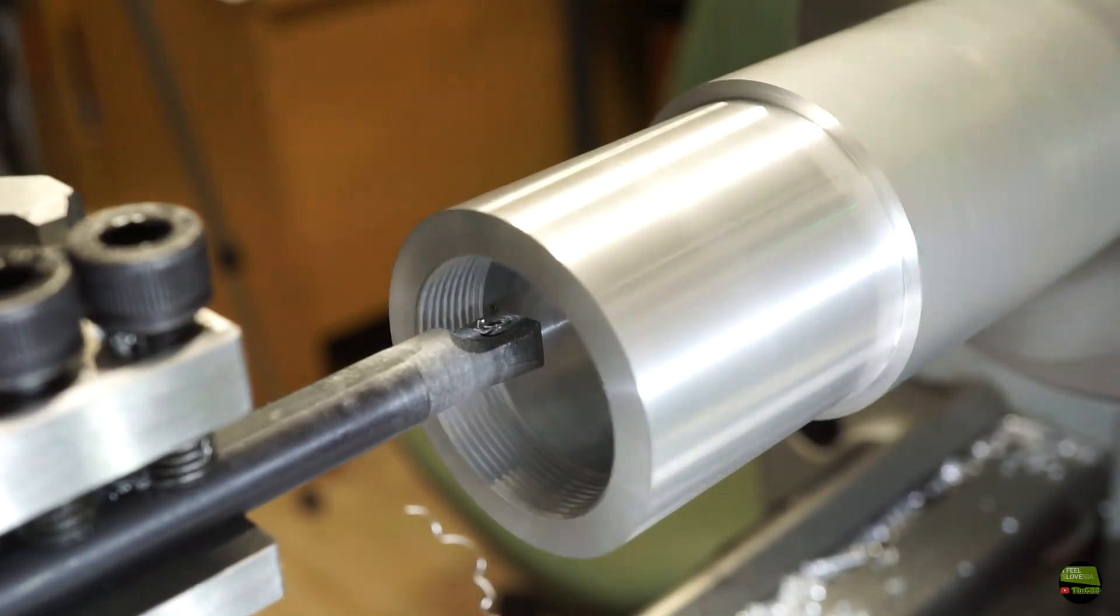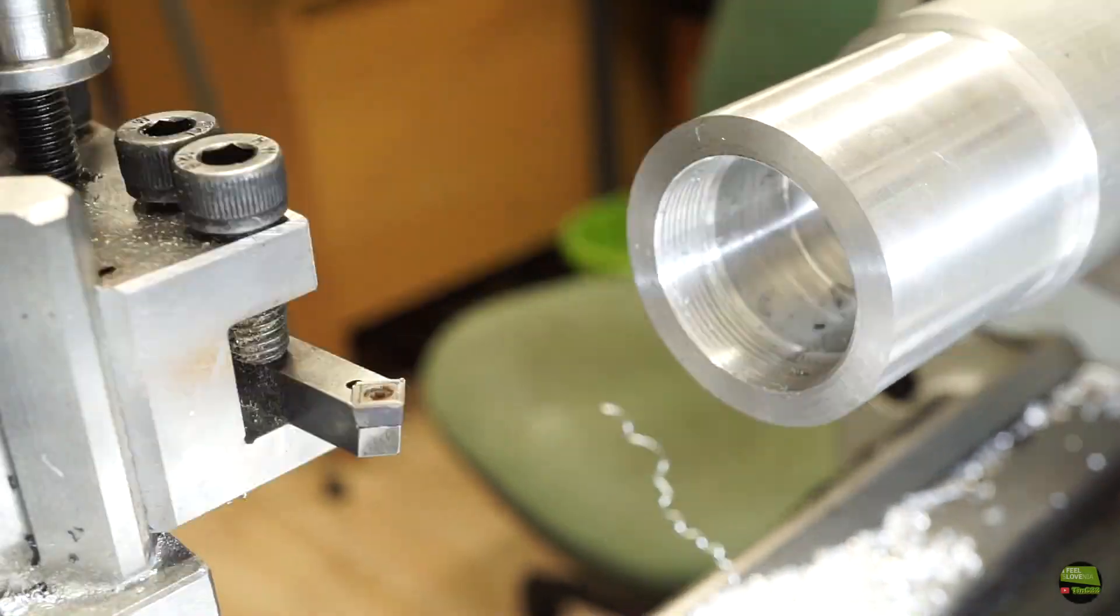Thread is done. Now cut some chamfers, then drill a hole, cut a chamfer, and cut an M10 thread for the rod.